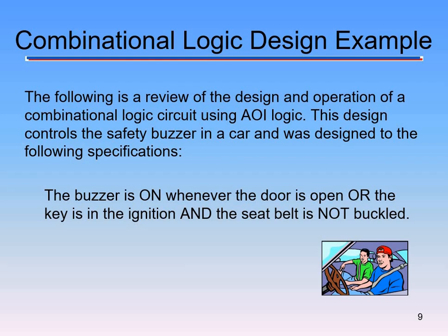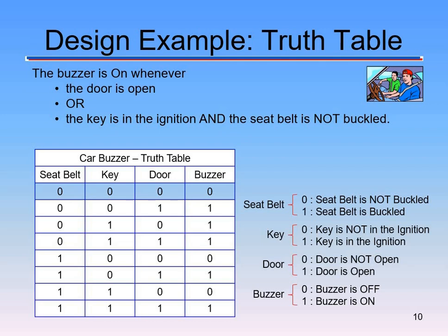We always create a truth table that covers all the different scenarios that can possibly happen. We have three inputs: seat belt, key, and door — and the output is the buzzer. We write the inputs in a specific order, and it's imperative you write the same bits exactly as shown: zero-zero-zero, zero-zero-one, zero-one-zero, zero-one-one, one-zero-zero, one-zero-one, one-one-zero, one-one-one. That order cannot change.